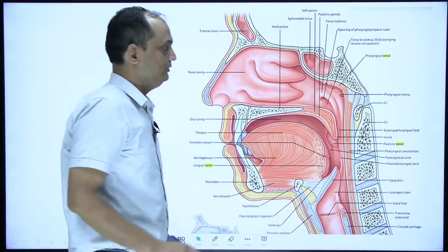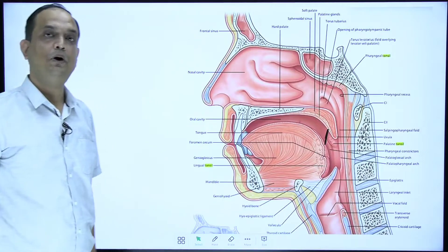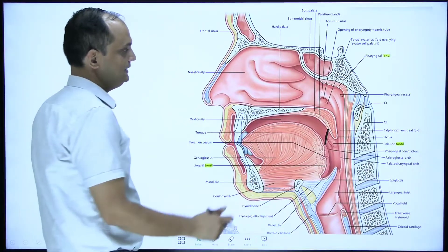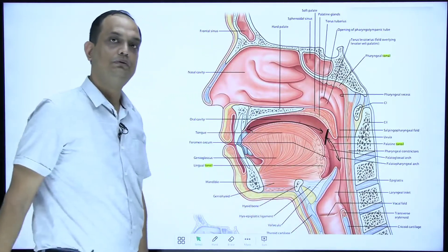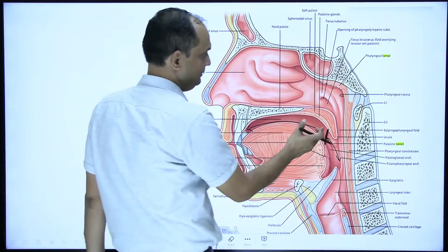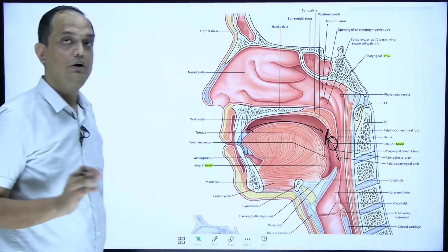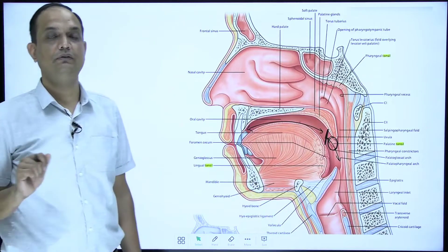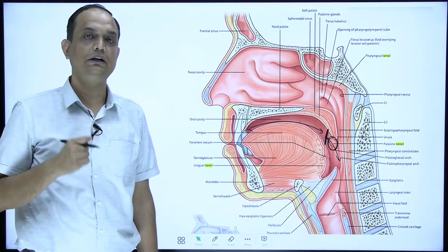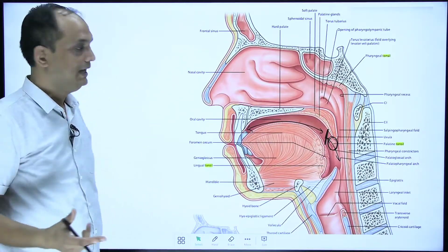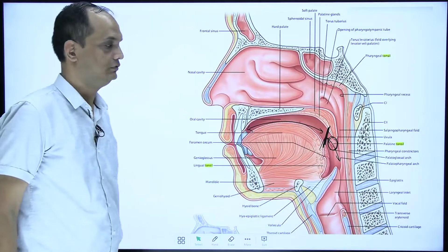The anterior pillar is a very important landmark because it separates the oral cavity from the oropharynx. Once you recognize the pillar as a demarcation line, the tonsillar fossa automatically becomes part of the oropharynx, not the oral cavity. This is important to always keep in mind: tonsils are not contents of the oral cavity. They are contents of the oropharynx, which starts from this anterior pillar.